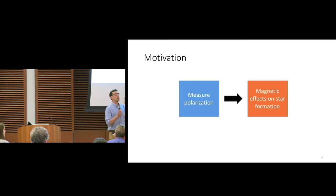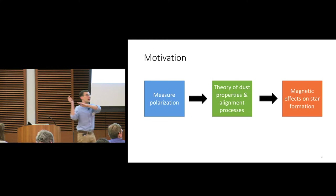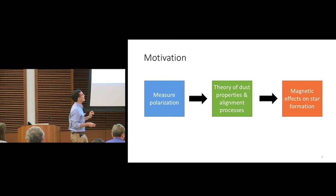Why do we even want to look at the polarization spectra of this aligned dust emission? Some people are interested in dust for dust's own sake. Others look at this polarized dust and want to use it as a tool to study what magnetic fields do in the ISM and their impacts on star formation. Observers measure the polarization and want to map it onto physical phenomena — but you need the step in the middle: knowing everything about dust and how dust gets aligned.